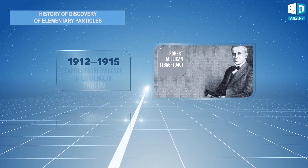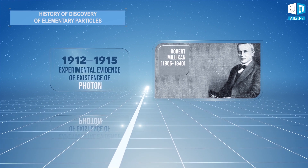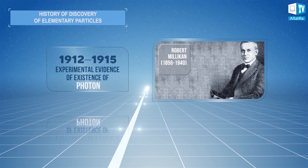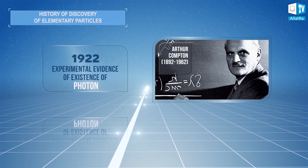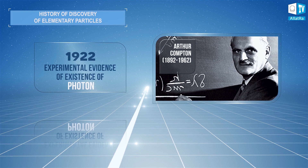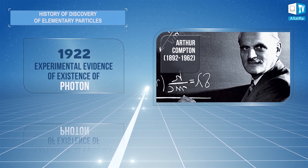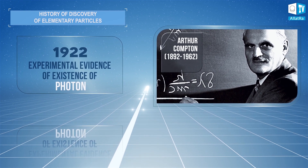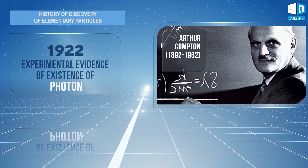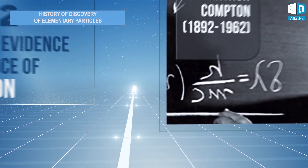The direct experimental evidence of the existence of the photon was obtained by American physicists Robert Millikan in 1912 to 1915 and by Arthur Compton in 1922.